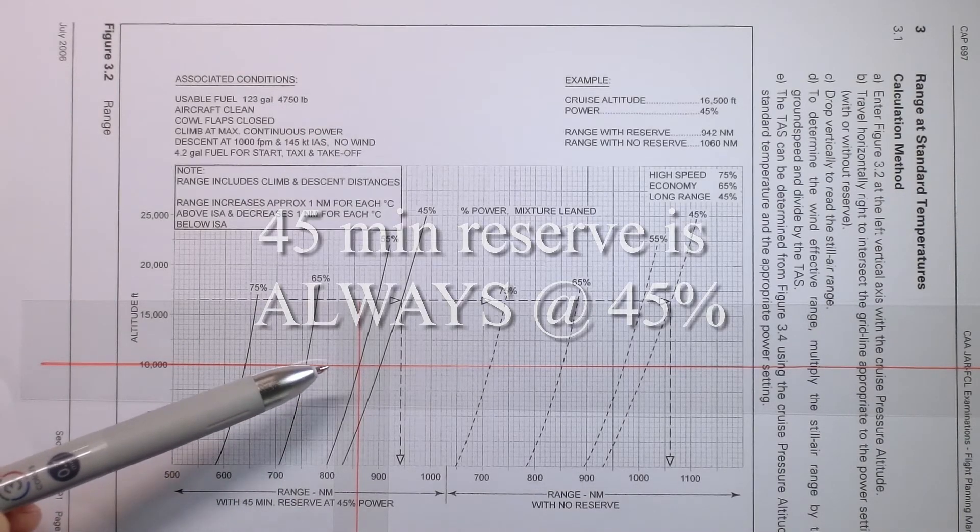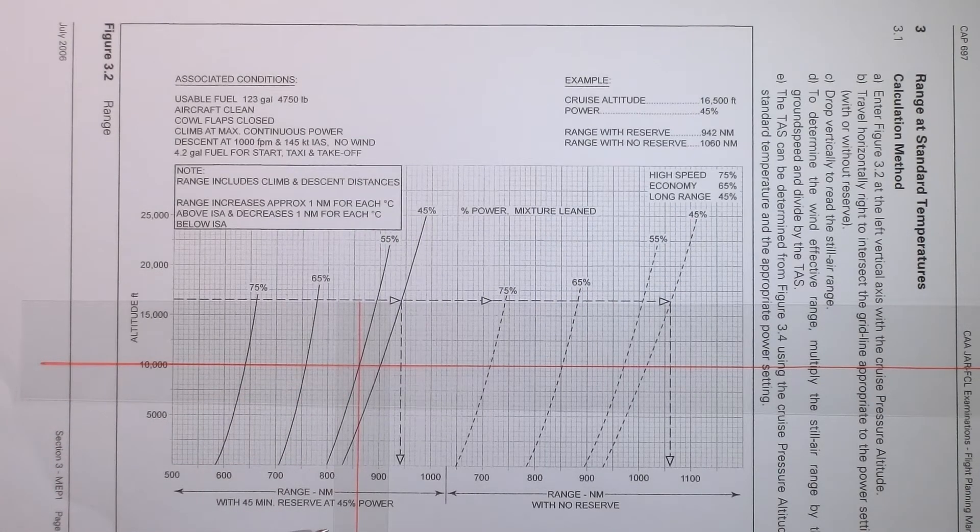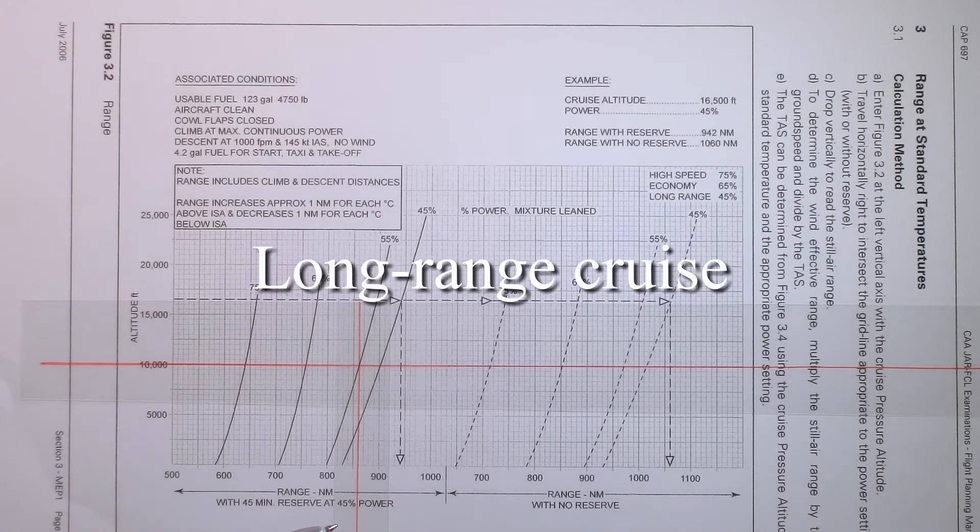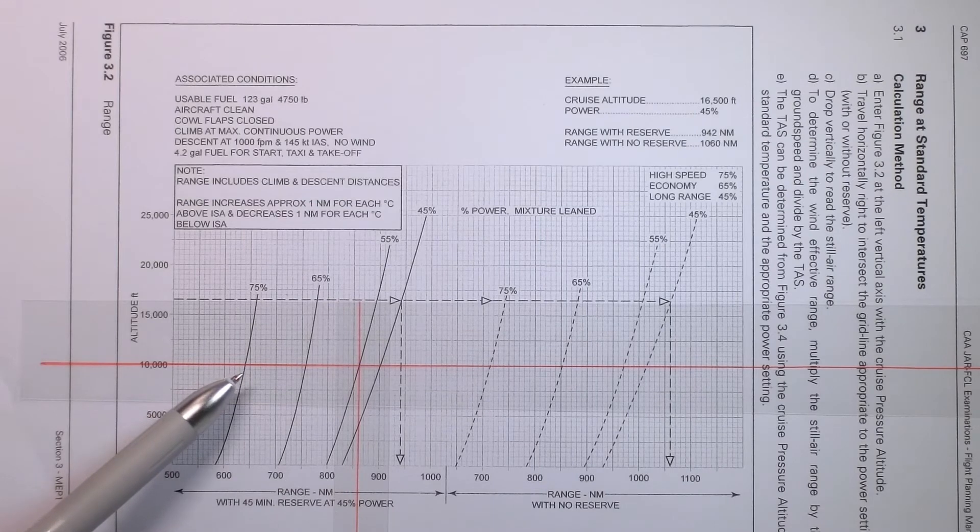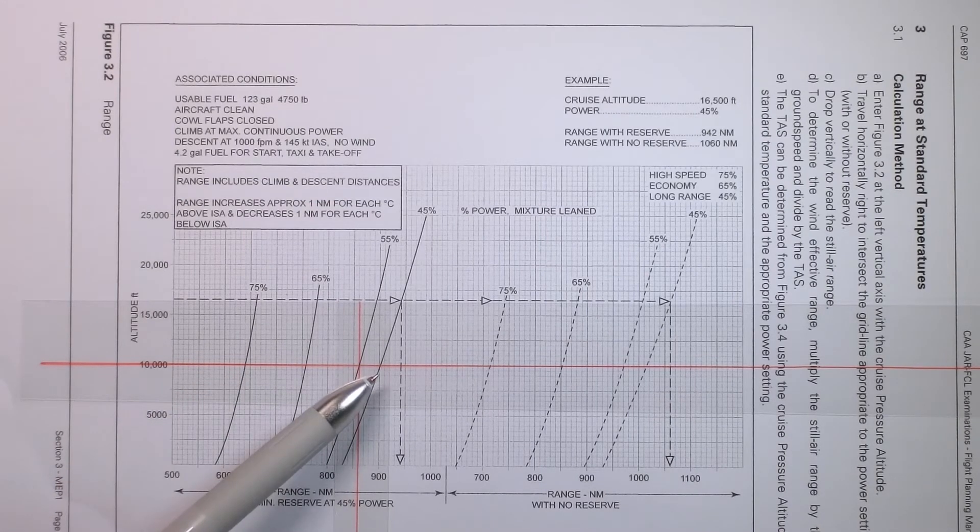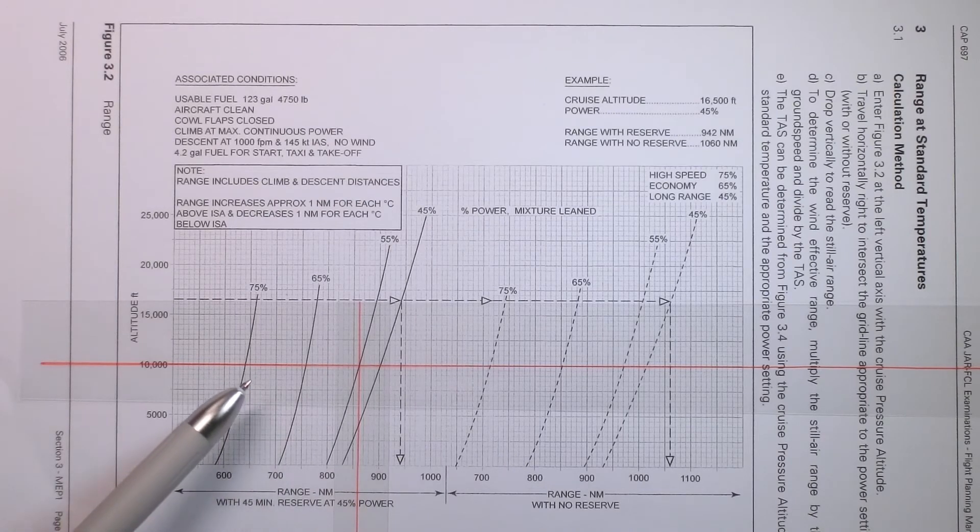Now you might be thinking, well, we've got a power setting of 55%, why is the reserve at 45% power? And the reason the reserve is at 45% power is that this is actually long range cruise. So regardless of the power setting, whether we went high speed cruise at 75% or 45%, the reserve fuel will always be set at 45 minutes at 45% power. So do take note of that. The reserve is not for the initial power setting.